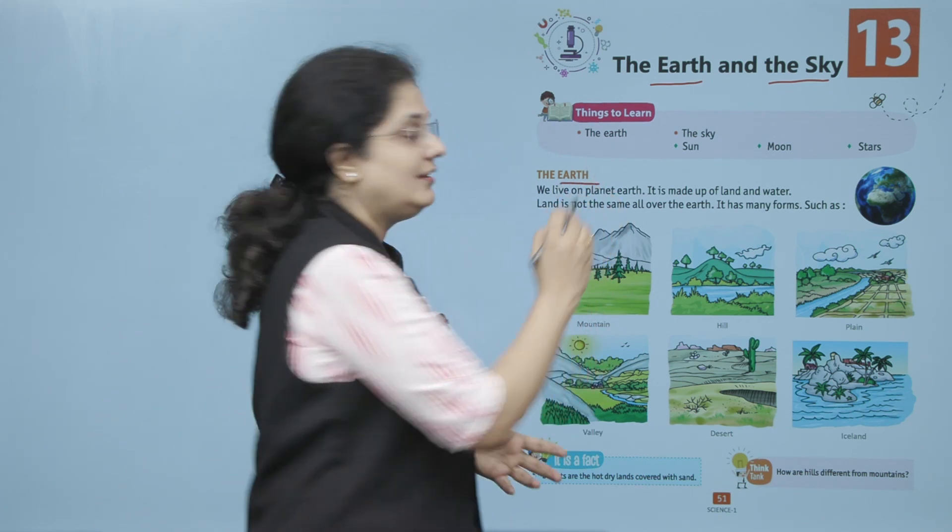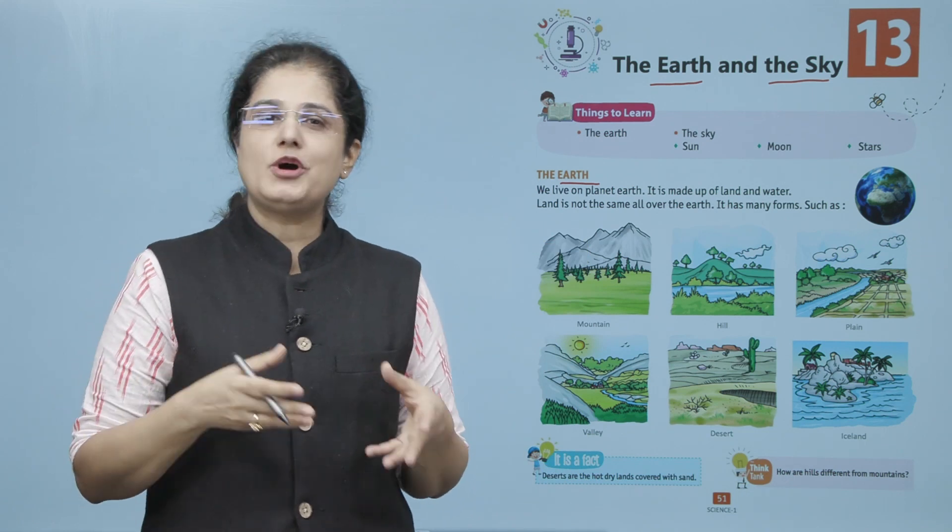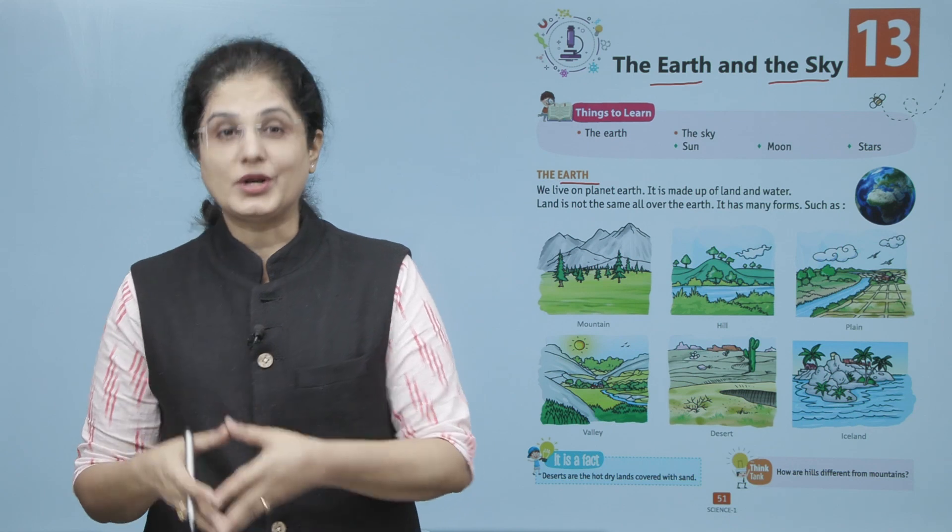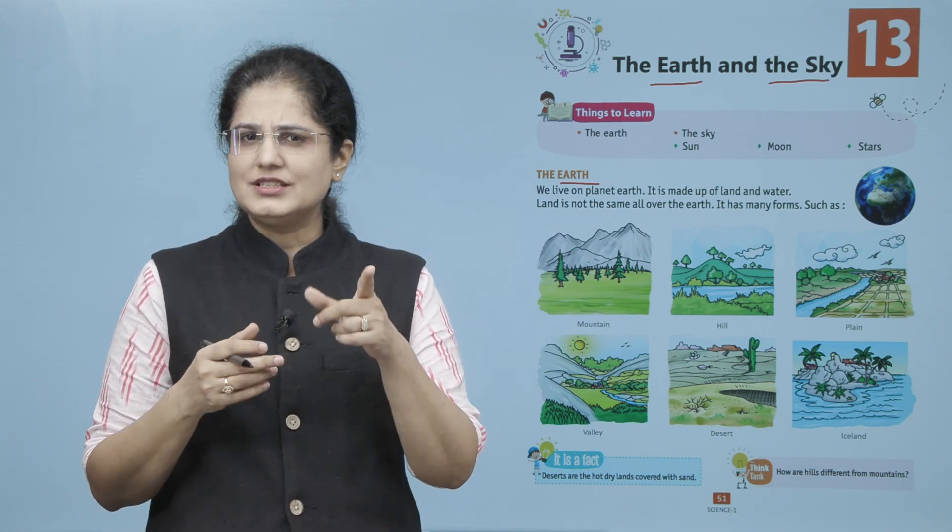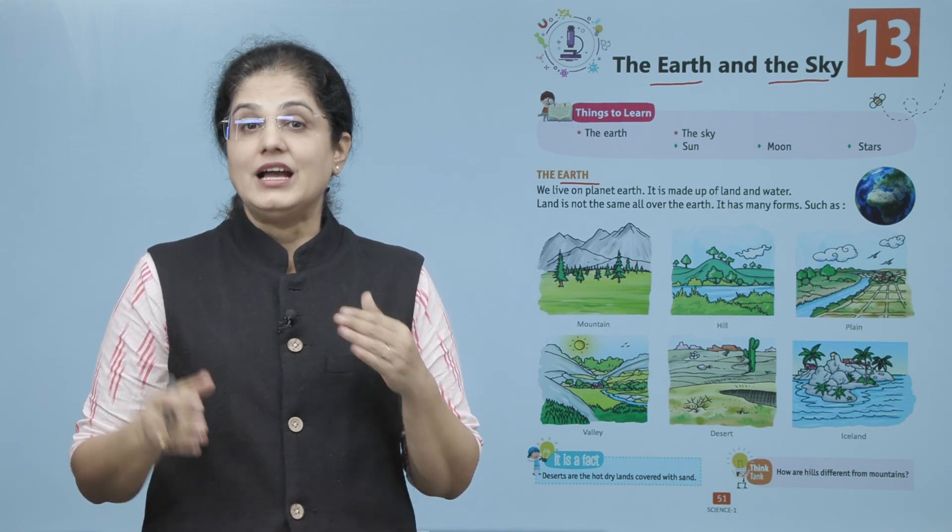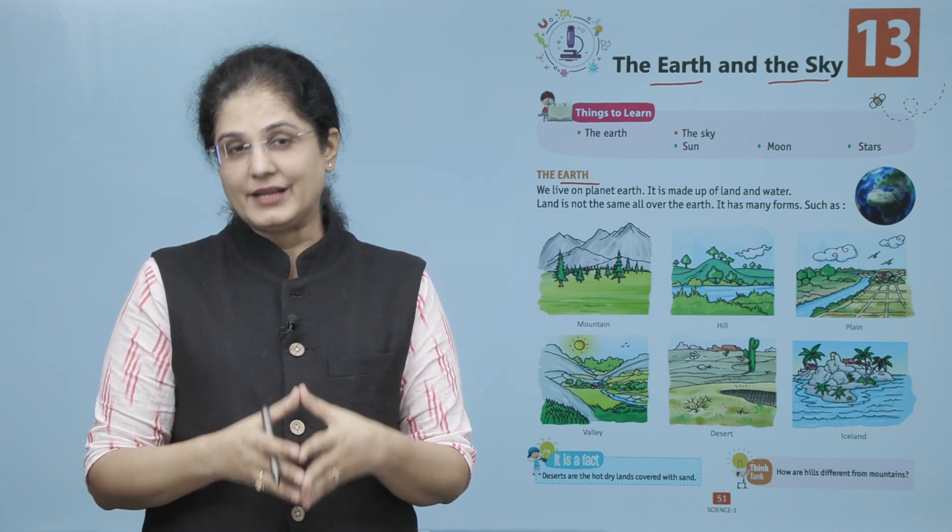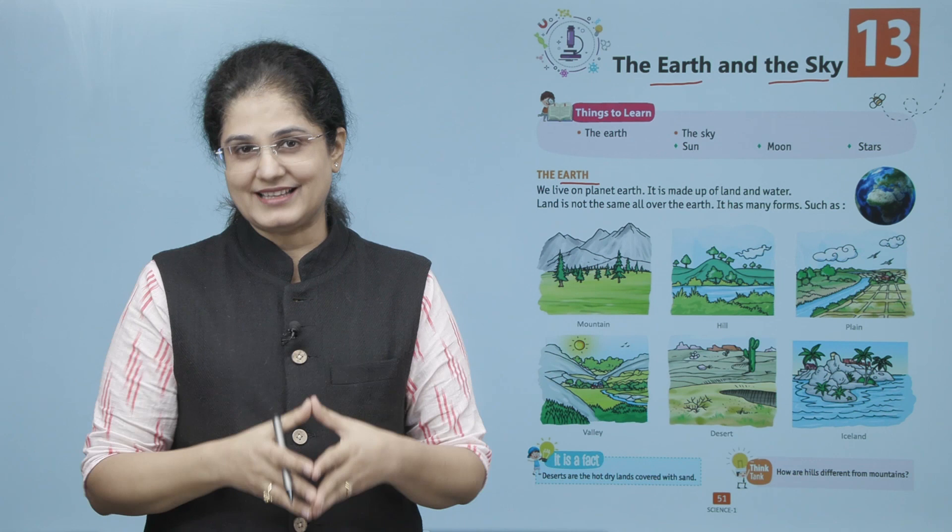We live on planet Earth. It is made up of land and water. Land is not the same all over the Earth. It has many forms. Hum just planet per rahte hain humse Earth kehte hain. Earth pe land bhi hai yaani ki zameen bhi hai aur pani bhi hai. Jo zameen hai wo puri Earth pe ek jaisi nahi hai, uskai alag alag forms hain.